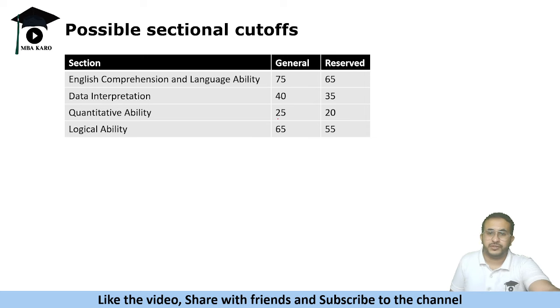If you talk about the quant section which was disastrous, very difficult, I don't think the cutoff would be more than 25. Many of you must have scored even less than that. Despite scoring over 300, there are a lot of students who must have scored less on the quant section. So if they wish to filter out students based on sectional cutoffs, they would keep the sectional cutoffs as these numbers.